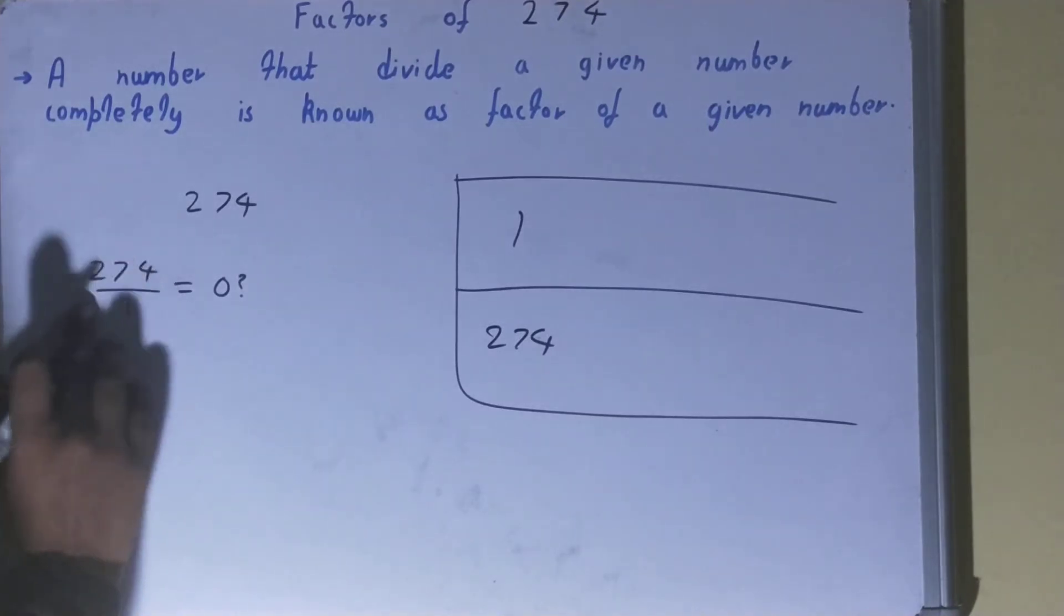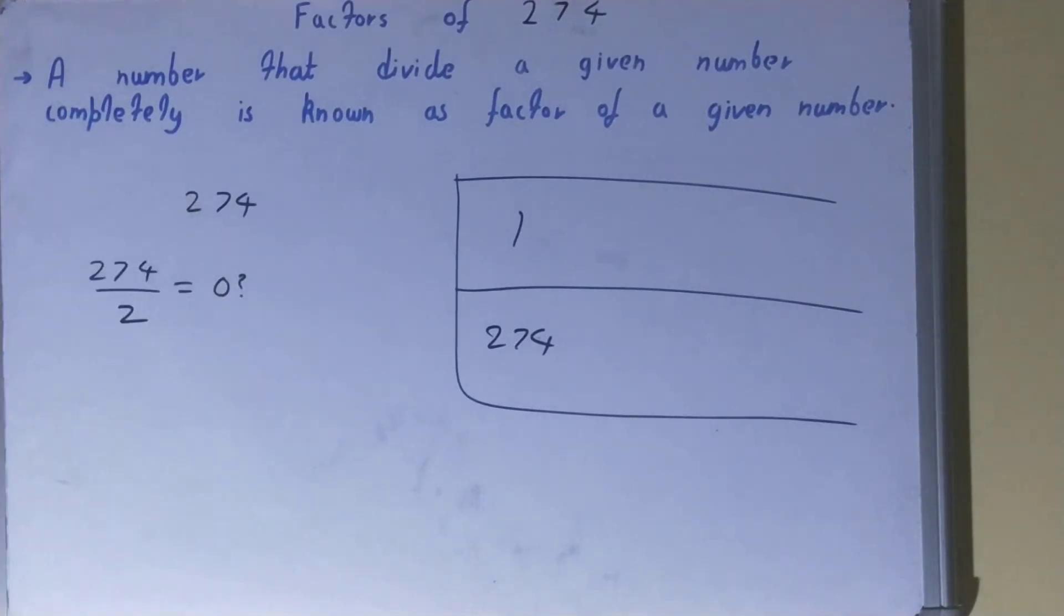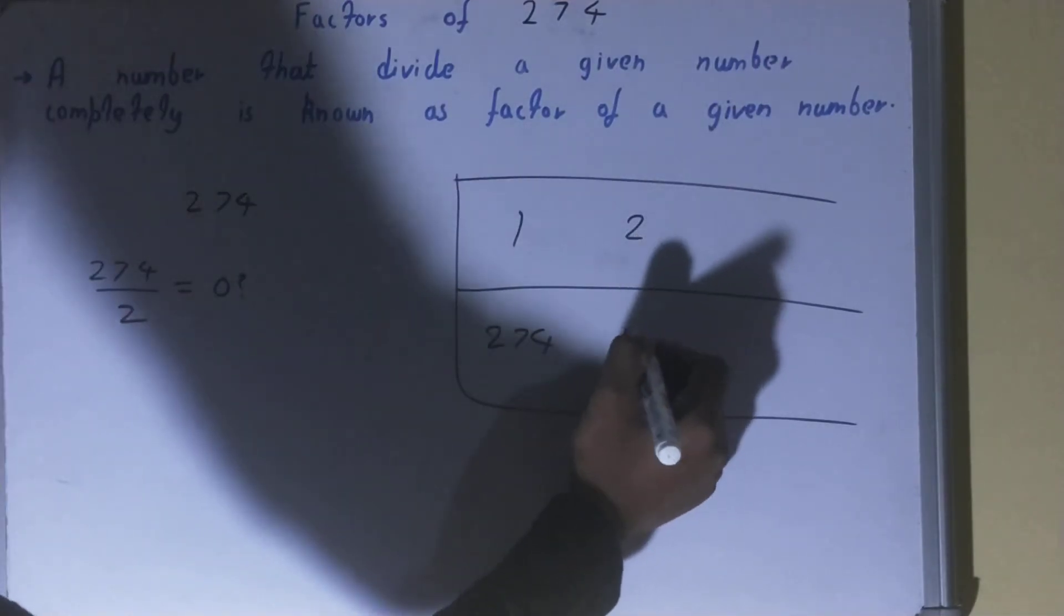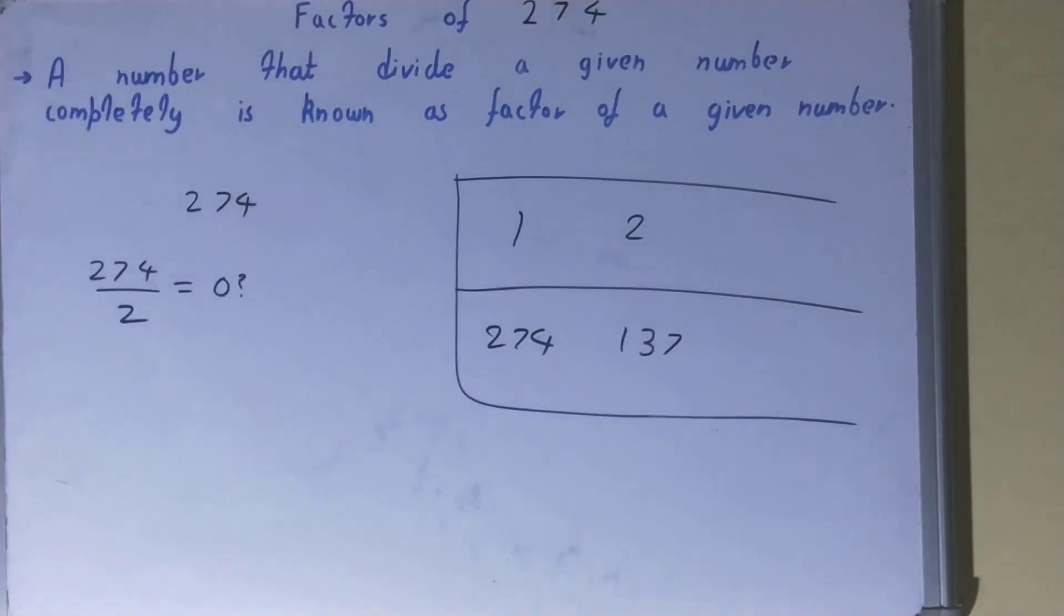After one, we'll check with two. Now is the number 274 completely divisible by two? The answer is again yes, because 274 is an even number and all the even numbers can completely be divided by the number two. So two is a factor, and two into what times? Two into 137 times.